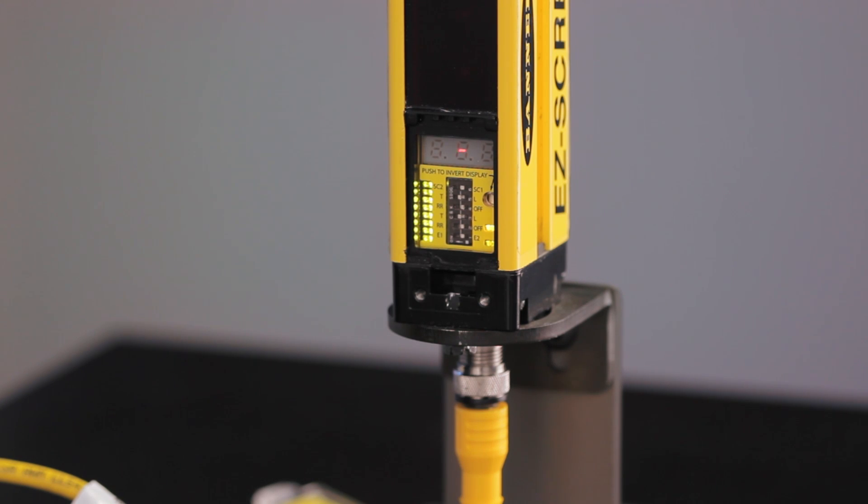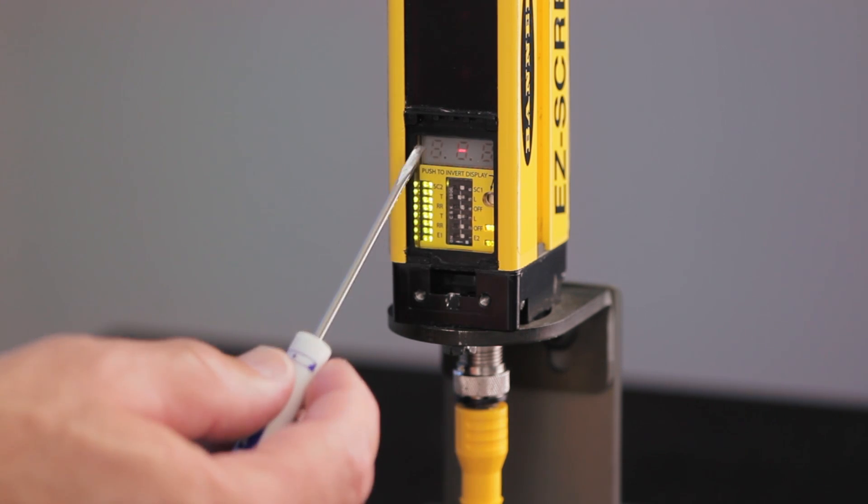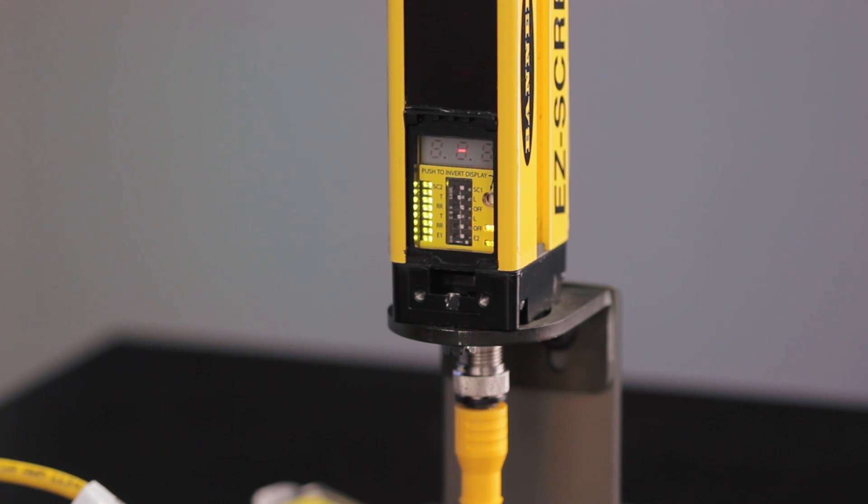You should now have a dash in the display and your bar graph should show you where the obstruction is by blinking. You have now completed fixed blanking on the EasyScreen system.